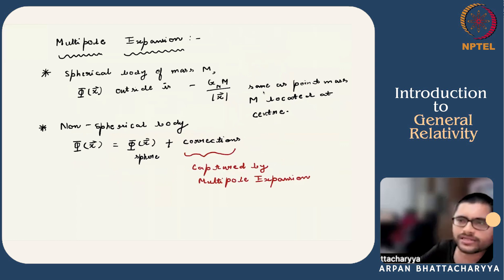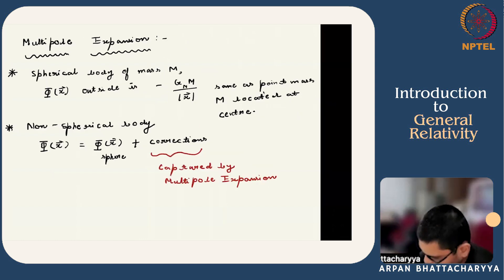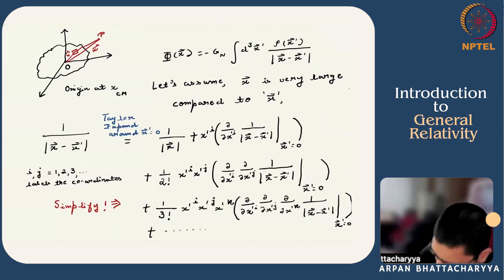Now we will discuss an important concept which is the multipole expansion. Newton derived for a spherical body of mass M that the potential at a point x outside this spherical body is given by this, which is the same as a point mass M located at the center of the sphere. But for a non-spherical body, this expression will have some corrections, and these corrections are captured systematically by something called a multipole expansion.